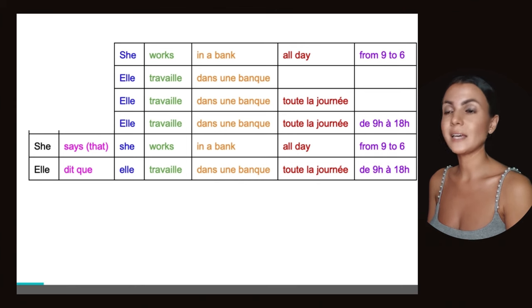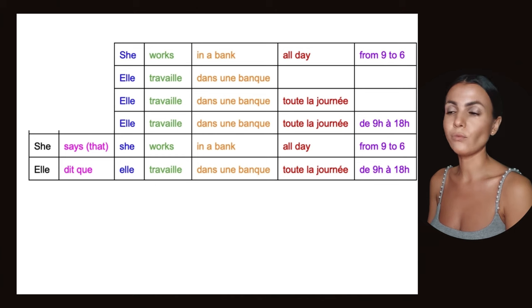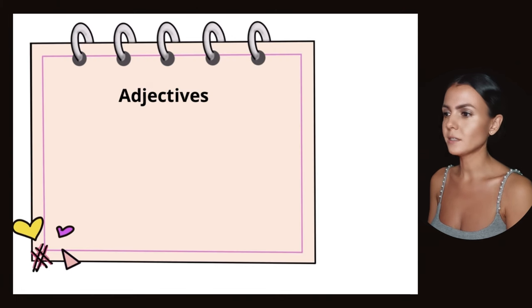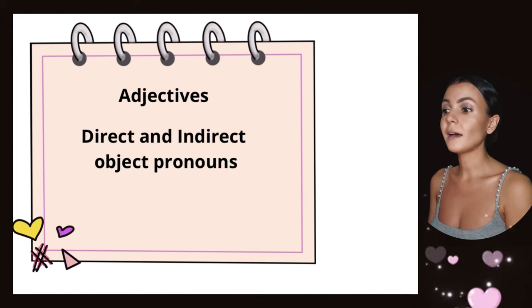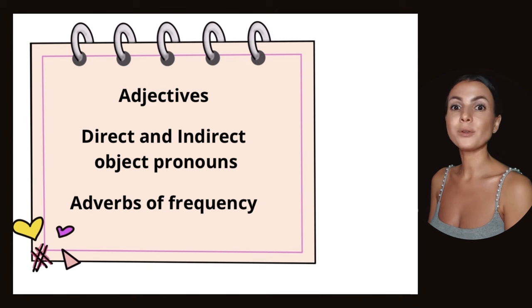She says that she works in a bank all day from 9 to 6. Same structure in French: Elle dit qu'elle travaille dans une banque toute la journée de 9h à 18h. So far it's easy - you make your sentence as in English, you follow the same structure. Okay, the three basic cases you should know from very early: adjectives, direct and indirect object pronouns, and adverbs of frequency. We are not going to follow the same order in French as in English.